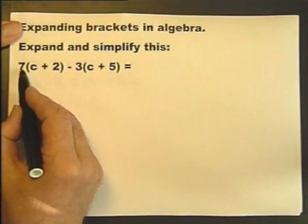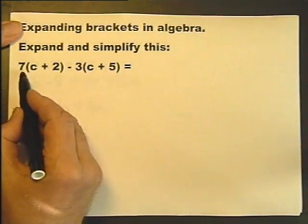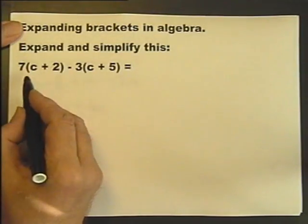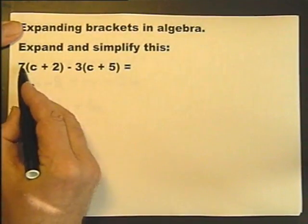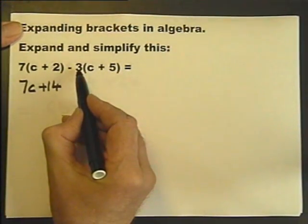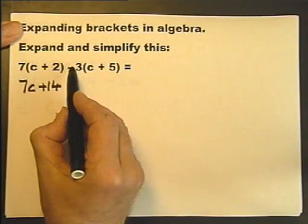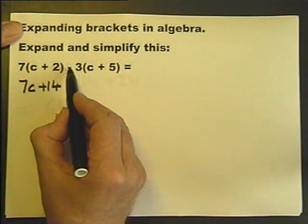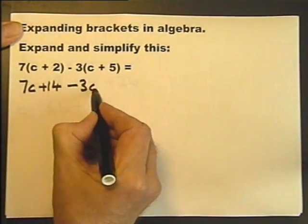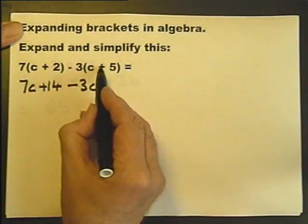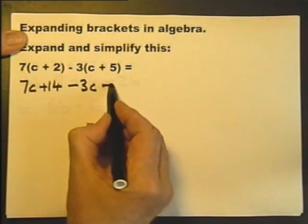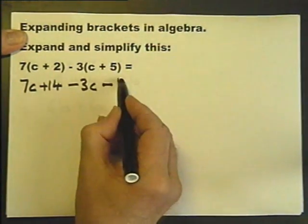Outside this bracket is 7. It's actually plus 7, but there's no need to think about that plus. 7 times C is 7C, and 7 times plus 2 is plus 14. Now outside this bracket is not only a 3, but a minus. And we do have to think about that minus. Minus 3 times C is minus 3C, and minus 3 times plus 5. A minus times a plus is a minus. So minus 3 times plus 5 is minus 15.